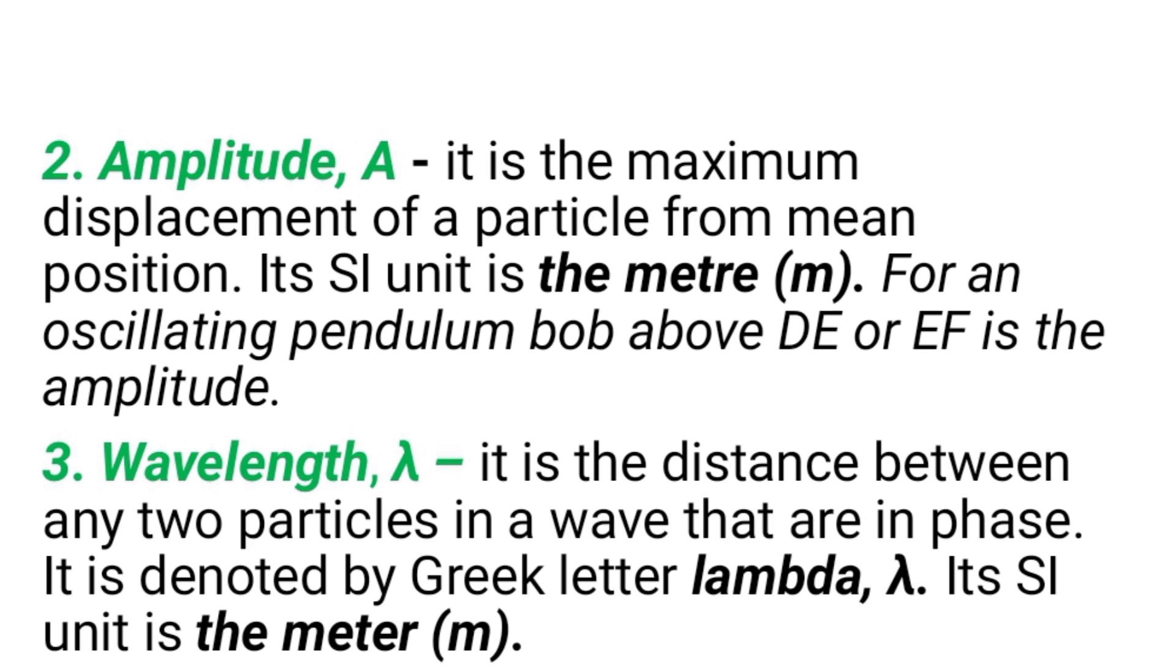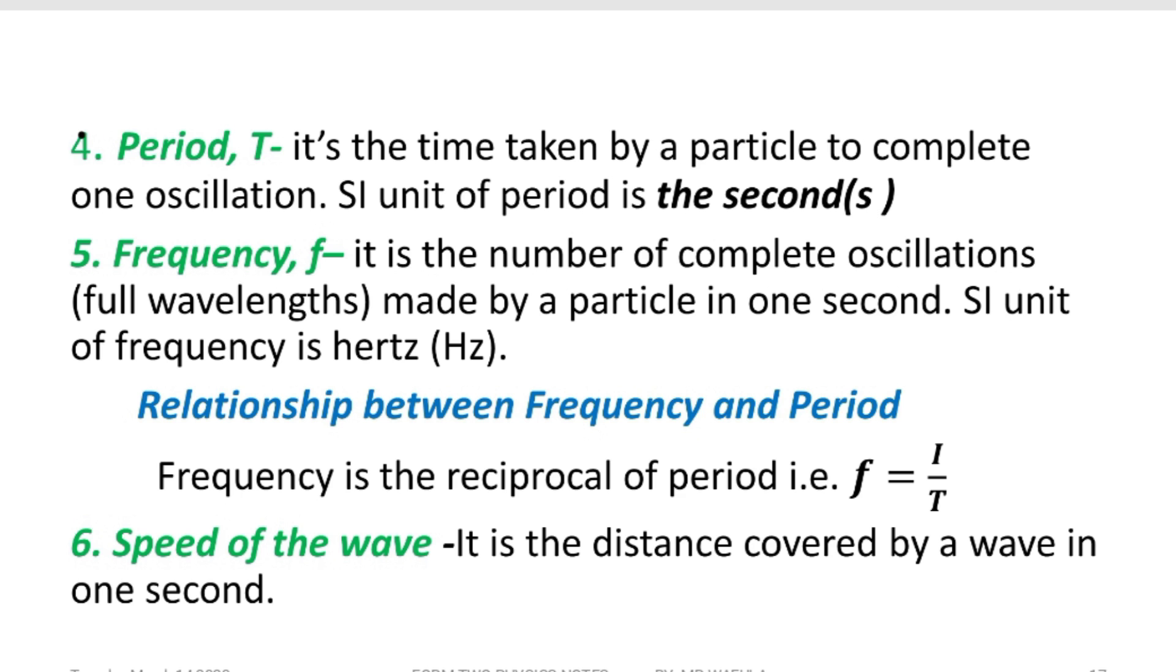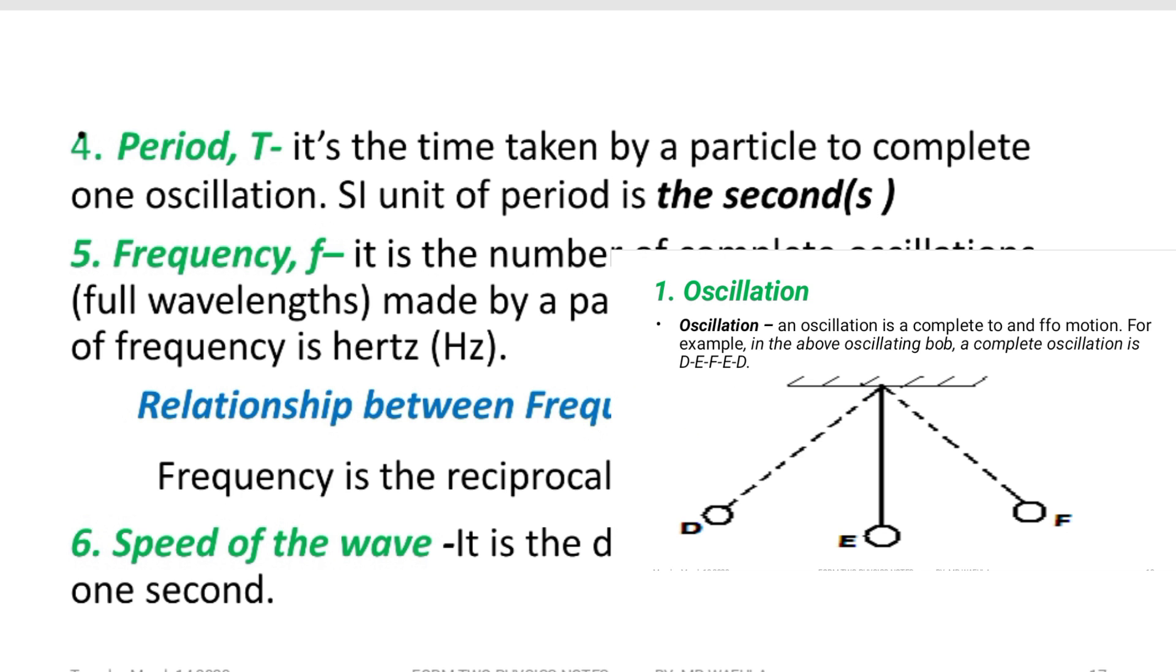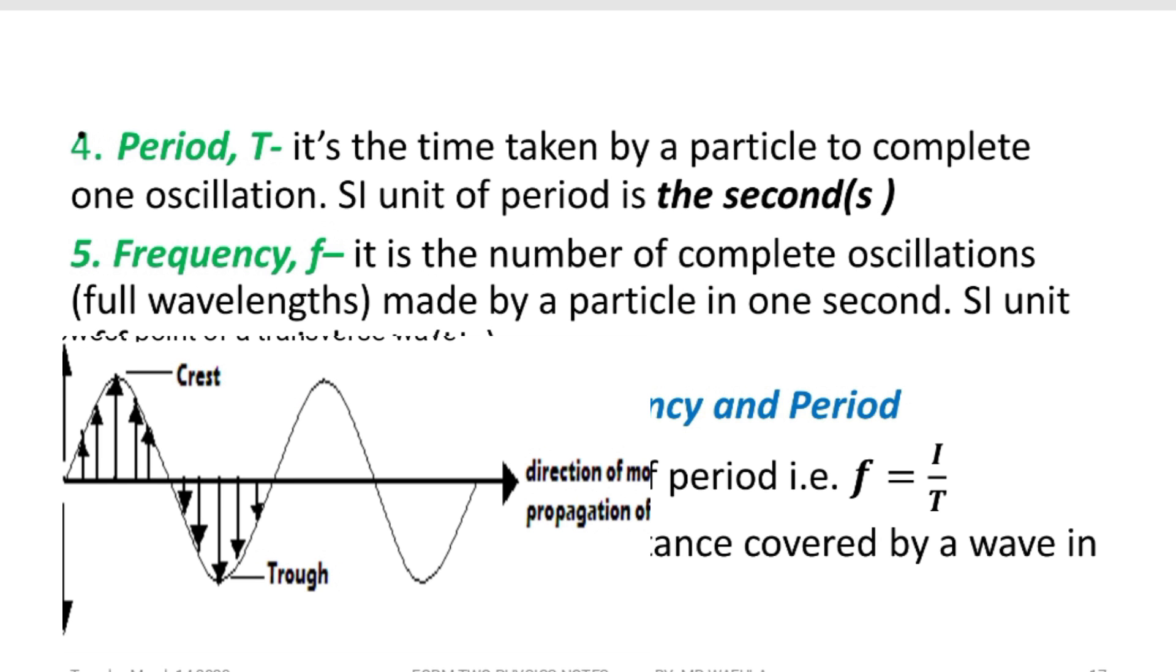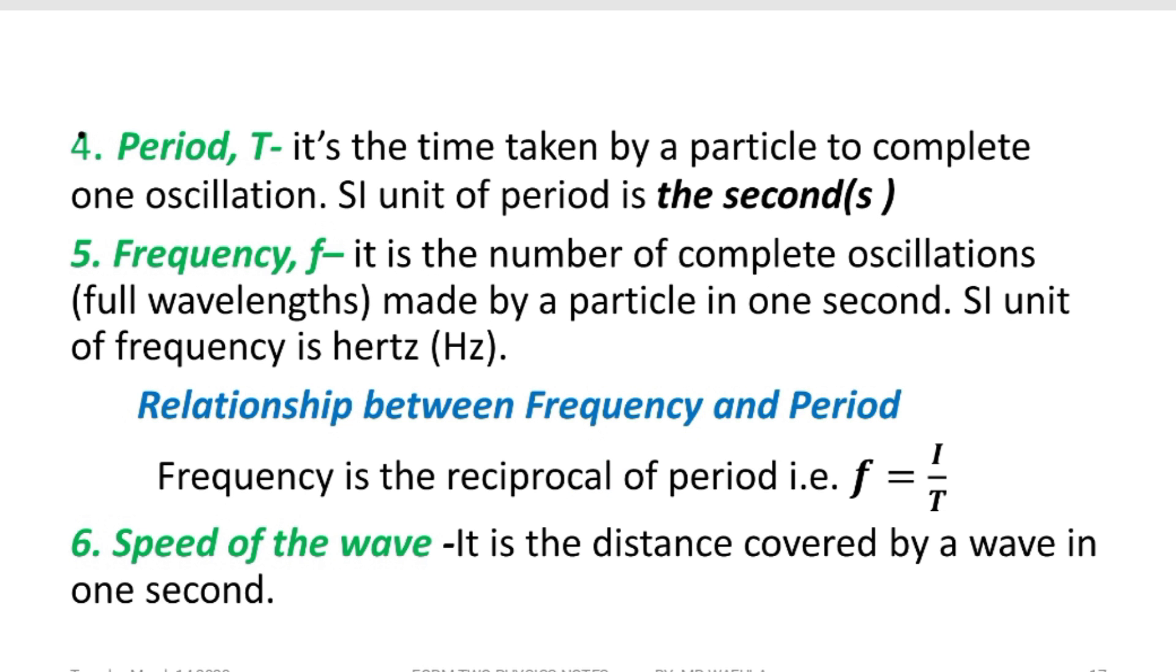We move on and talk about the period, which is the time taken by a particle to complete one oscillation. One oscillation from D to F and back to D, that is a complete oscillation. The time taken to complete that oscillation is the period. When we talk about the frequency, it's the number of complete oscillations made by a particle in one second. This wave has two oscillations. We'd like to look at the time it takes to complete one oscillation, or number of complete oscillations made by a particle in one second.